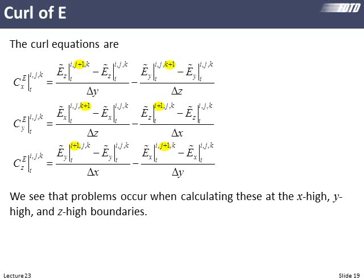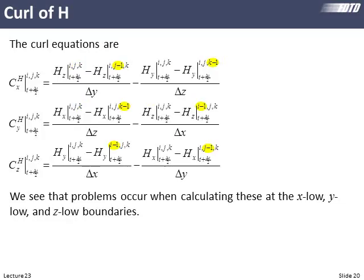Looking at the curl of the electric field — anywhere there's a plus-one index, those are the ones reaching to adjacent cells where there could be problems. We only have I plus one, J plus one, and K plus one, meaning for the electric fields we only have issues at the X high, Y high, and Z high boundaries, not at the low side. For the curl of H, our indices are minus one — I minus one, J minus one, K minus one — so we have boundary problems at the X low, Y low, and Z low boundaries.